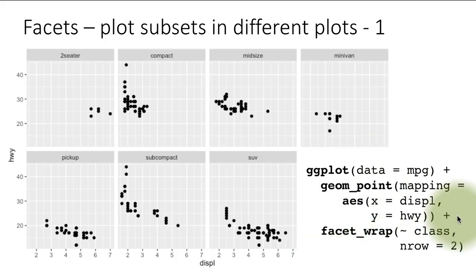Then you just add plus facet_wrap. You're adding this faceting as just another layer. You say, oh by the way, facet_wrap—that is, create for me facets and wrap the facets around into multiple lines. nrow equals 2 means arrange them in two rows.